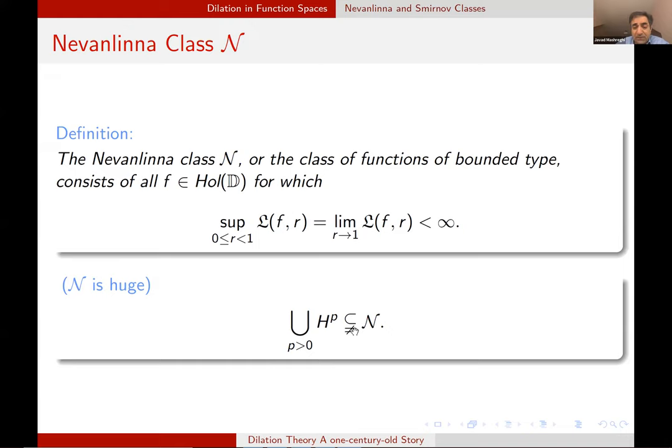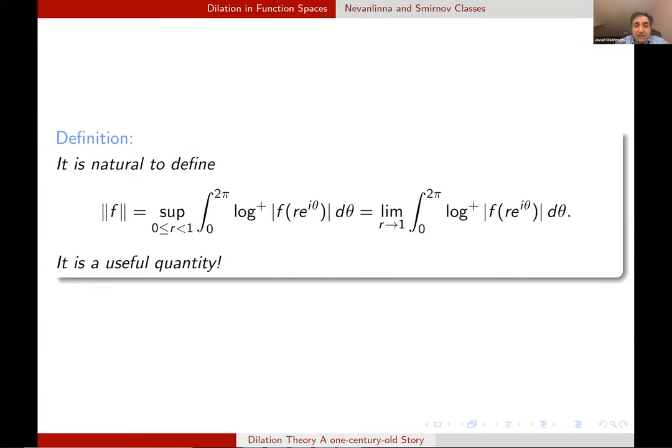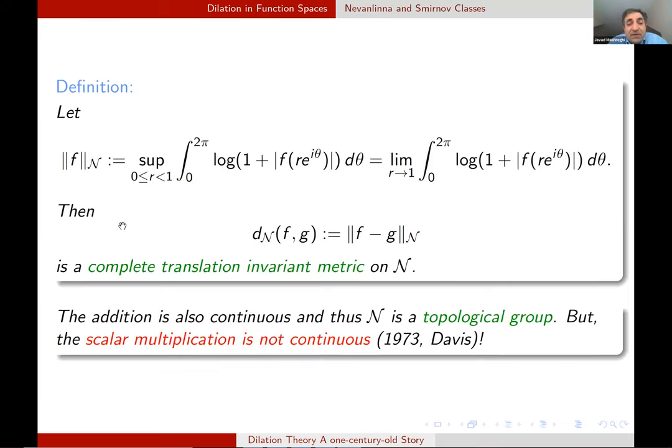This space is huge because all Hardy spaces are there and there are more. There are more elements in N. It is natural based on the definition to define a norm like this, but you immediately see it doesn't work. For example, if F in mod is less than or equal to one, this is identically equal to zero. Nevertheless, this is a useful quantity. And in many applications, we use this, even though it's not a norm, we use this notation. A better notation is this one, we add one here to overcome the previous difficulty.